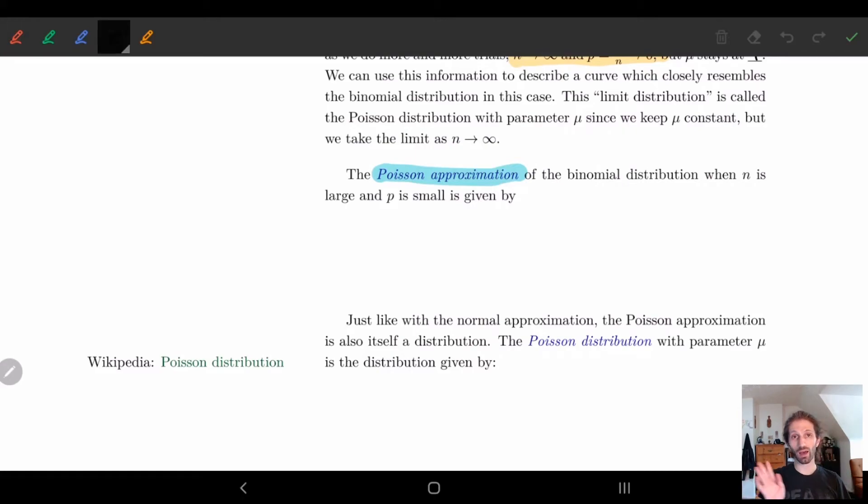Okay, so basically what we end up having is if we want k successes this is going to be approximated by e to the minus μ times μ to the k over k factorial. And here μ is really our expected value n times p for the binomial distribution.